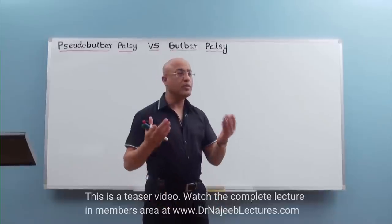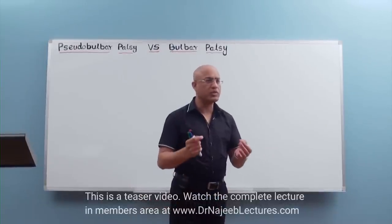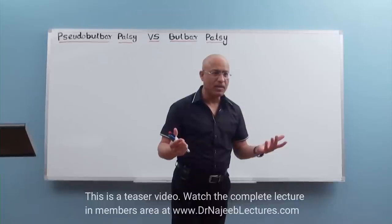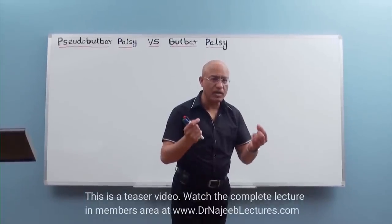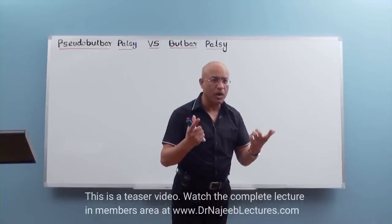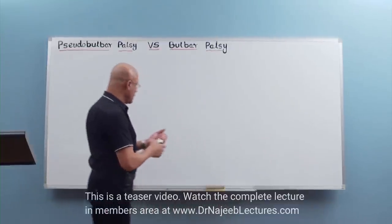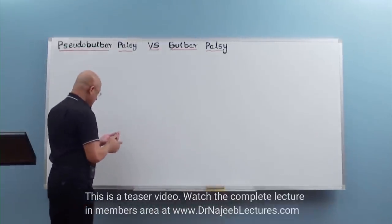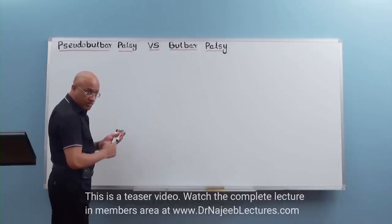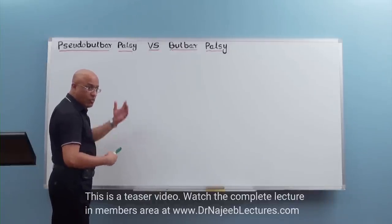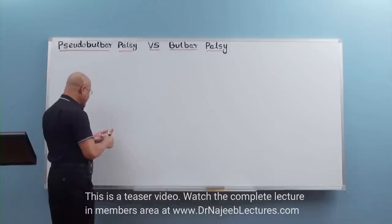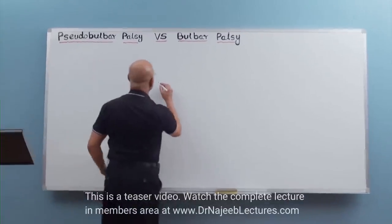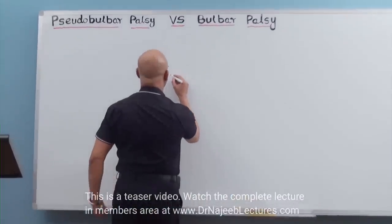So what is the bulbar system? The first question should be: what is the bulb? In the central nervous system, medulla is called the bulb. So let me draw the bulbar system, and then we will see why there is a palsy of bulbar system. Let me draw a basic diagram of the central nervous system.